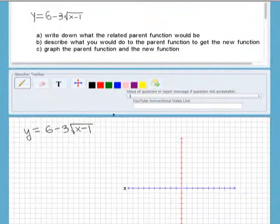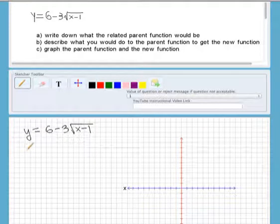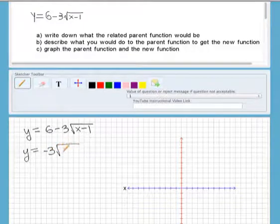Hi Lauren, thanks for sending us in your question. I've written it out here and the first thing we're going to do is rewrite it. I'm just going to change the order of it so it's easier to look at. So I'm going to put the negative 3 square root x minus 1 and then plus 6.